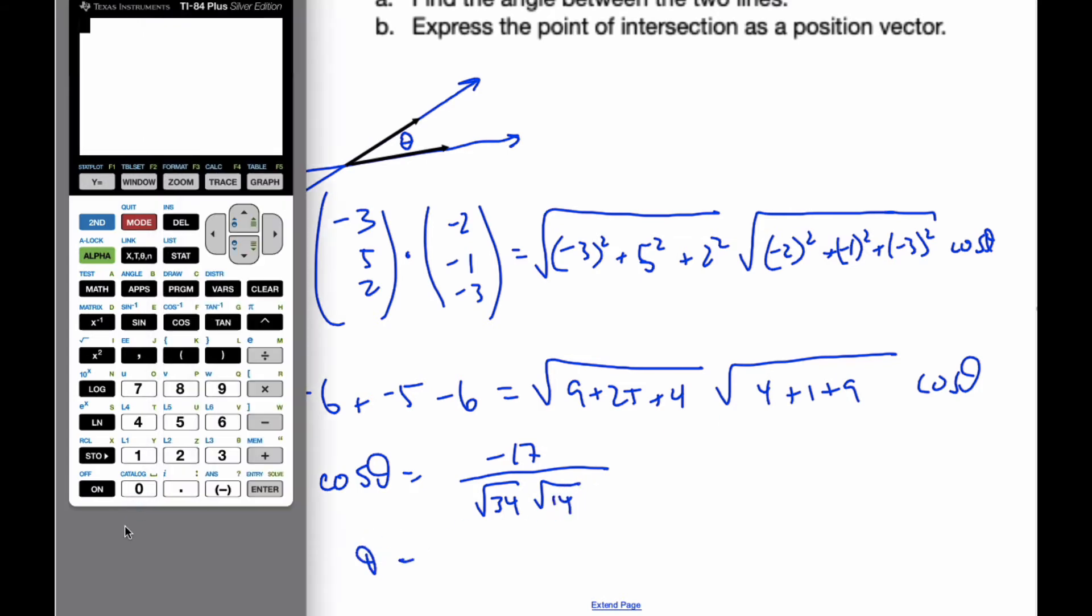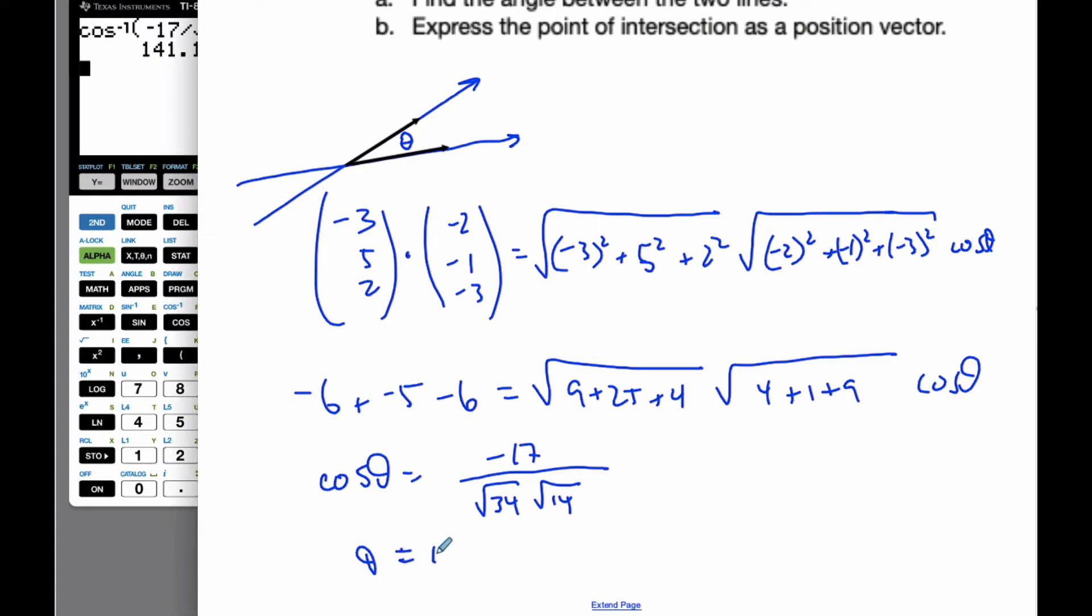If I go to my calculator now, and I go second cosine, negative 17 divided by the square root of 34 times 14, this will give me 144.1.